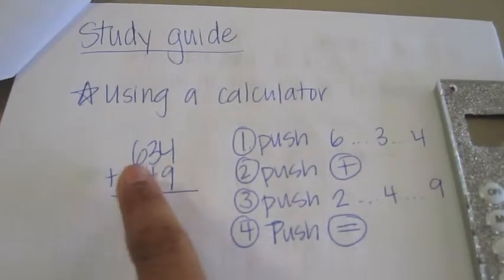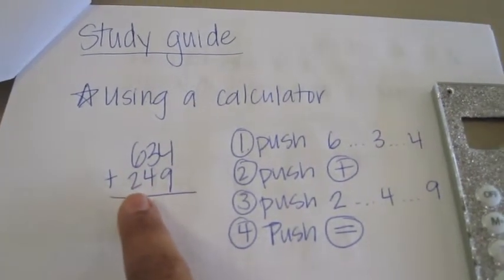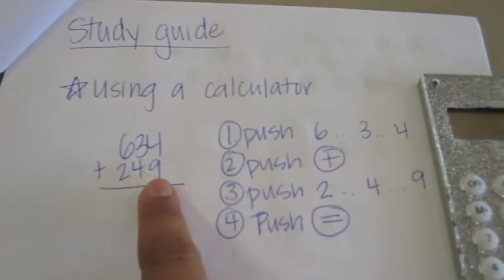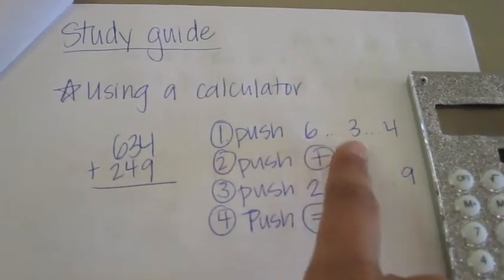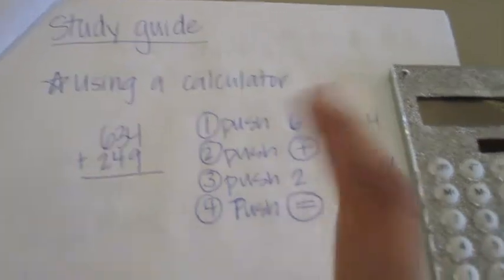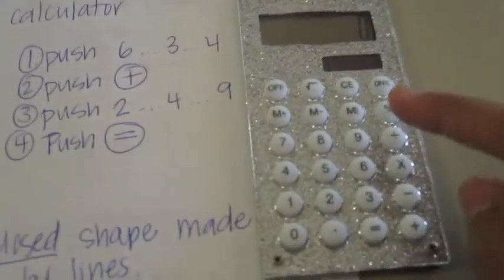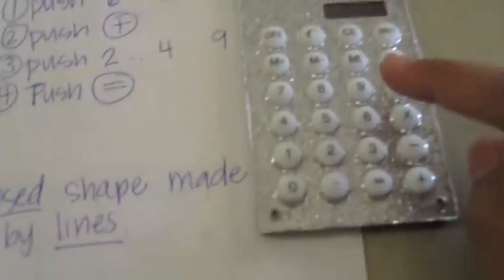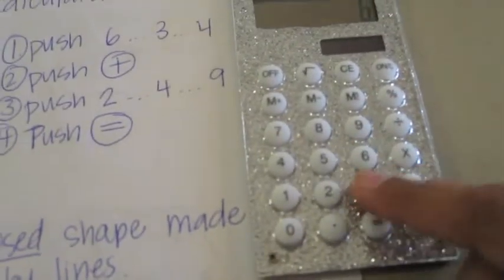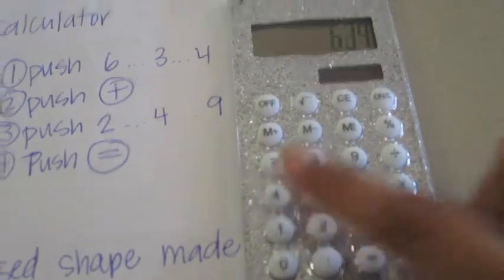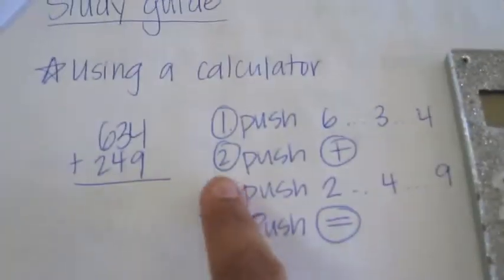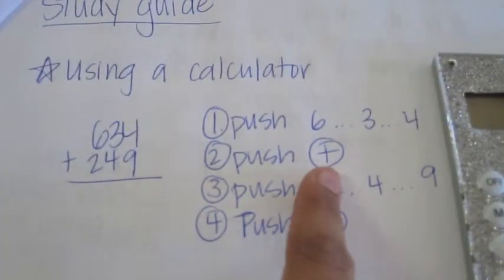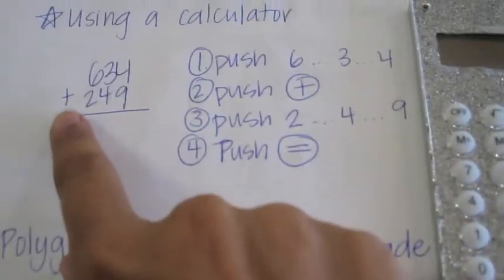634 plus 249. Push 6, 3, and 4 — that's all you should see. Then push plus because of that.